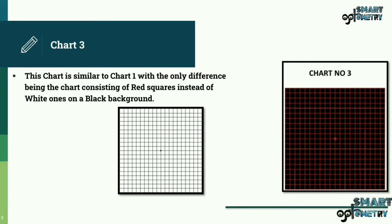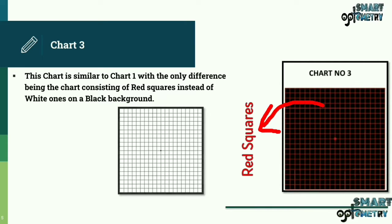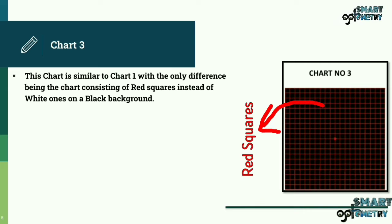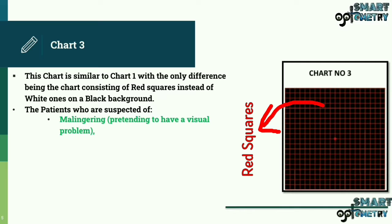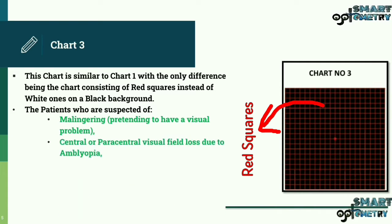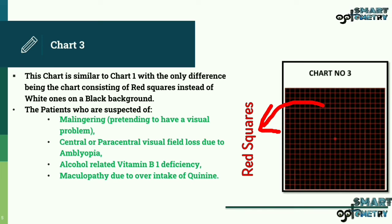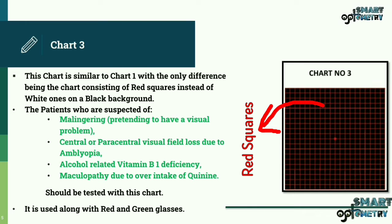Chart 3. This chart is similar to chart 1 with the only difference being the chart consisting of red squares instead of white ones on a black background. The patients who are suspected of malingering, pretending to have a visual problem, having central or paracentral visual loss due to amblyopia, alcohol-related B1 deficiency, or maculopathy due to over intake of quinine should be tested with this chart. It is used along with red and green glasses. Here you can see the Amsler's chart having a black background with red lines imprinted on it.